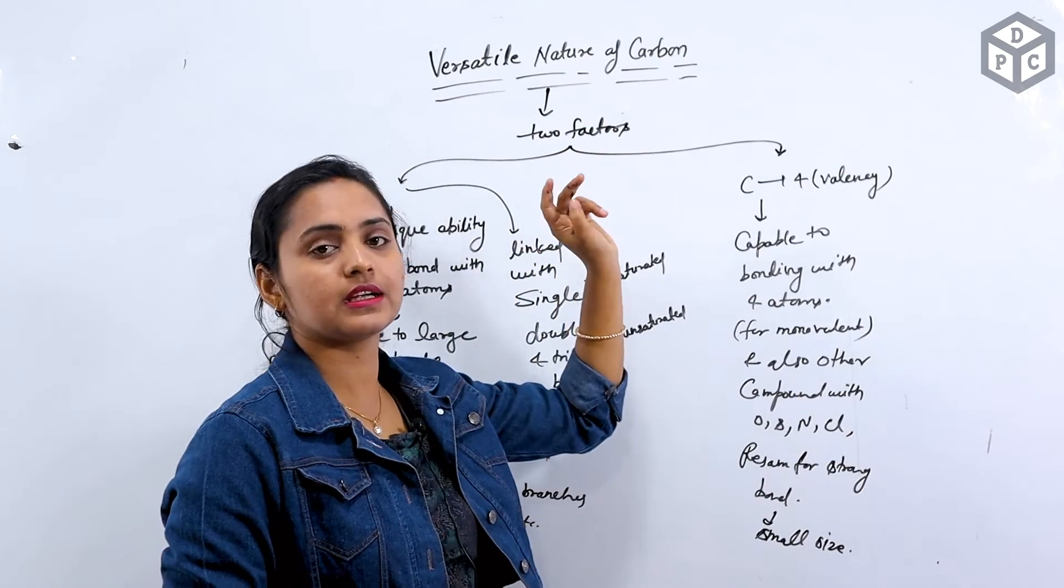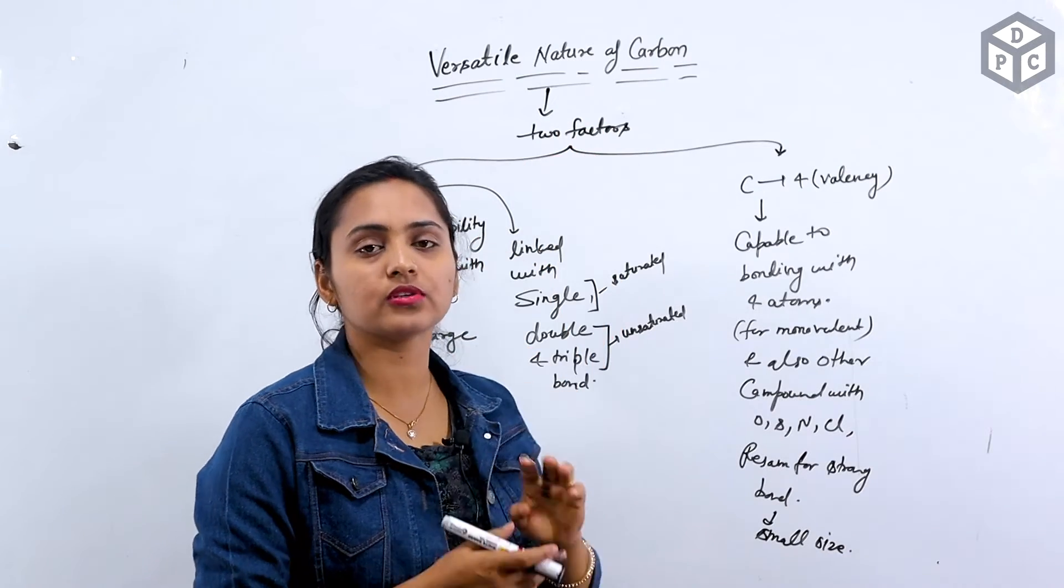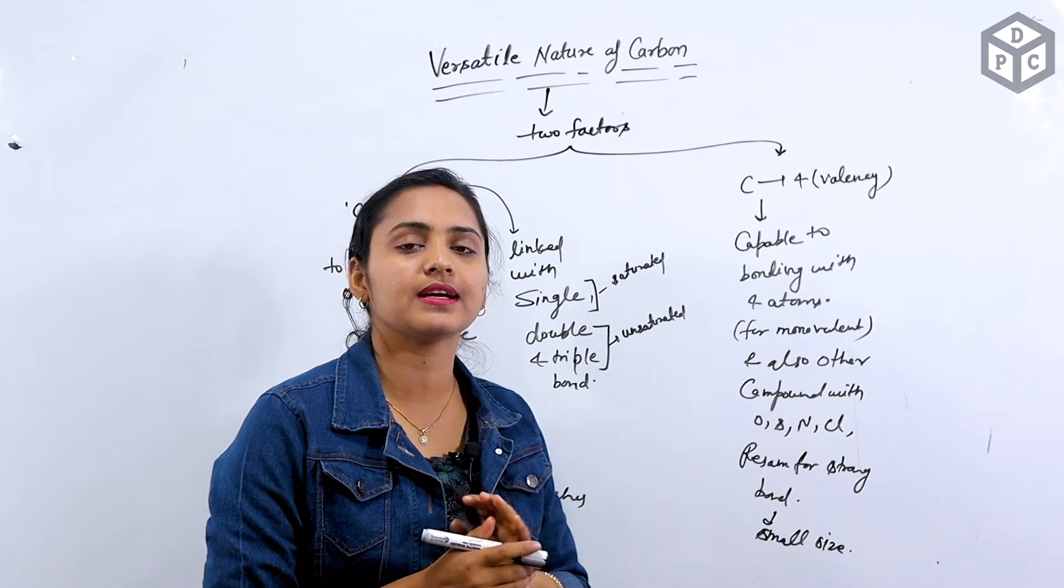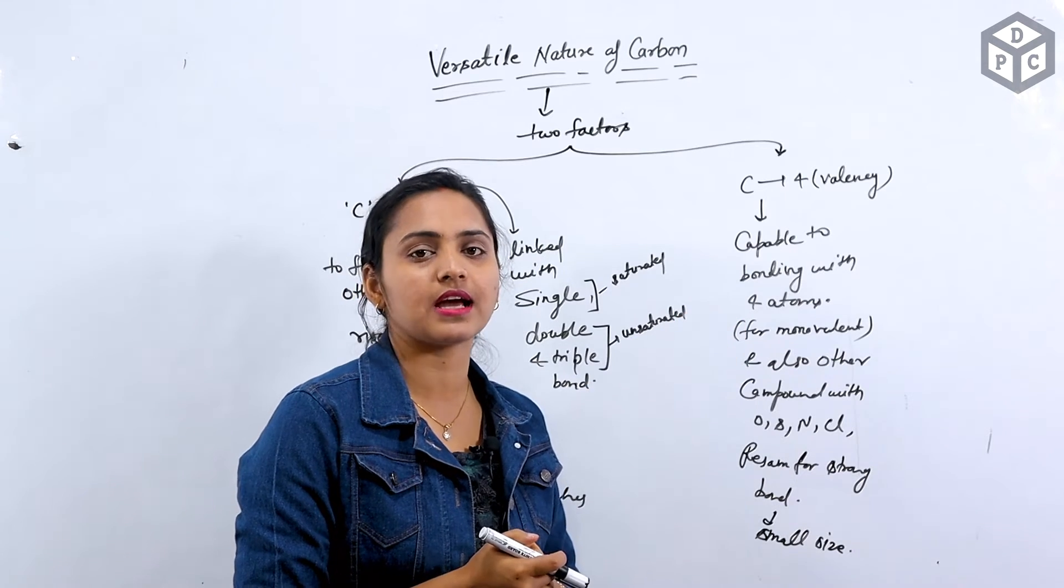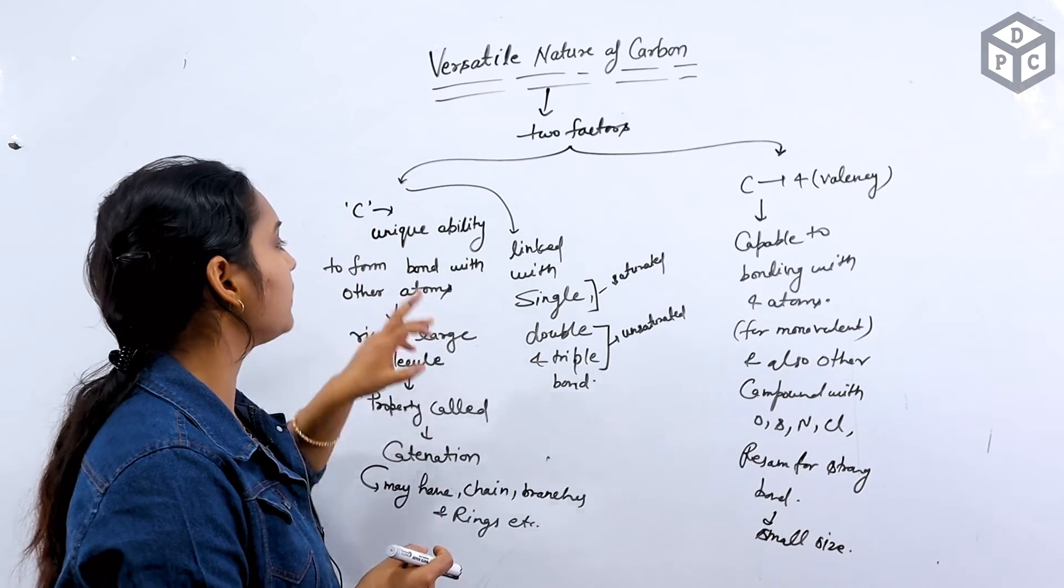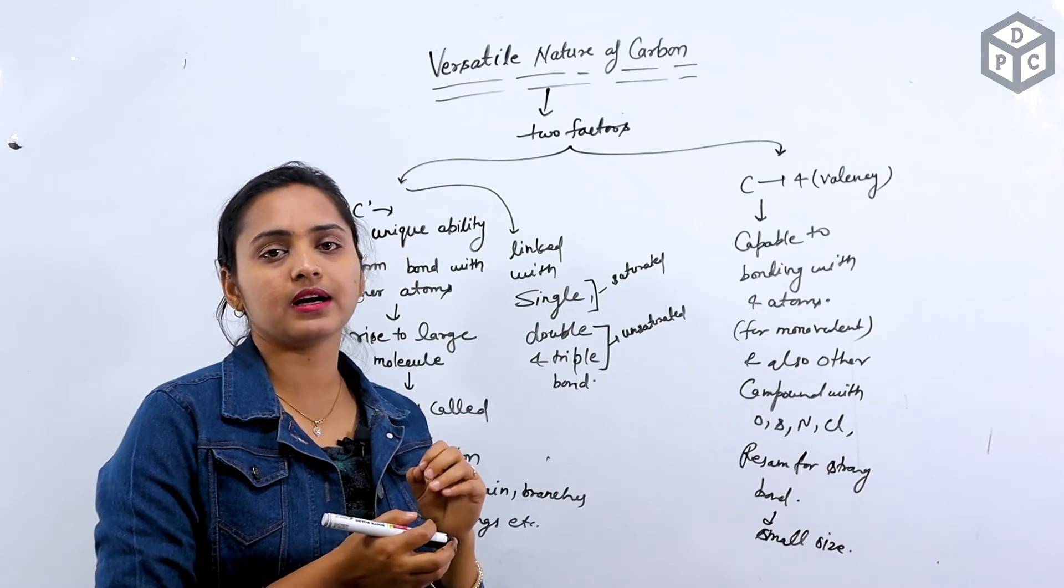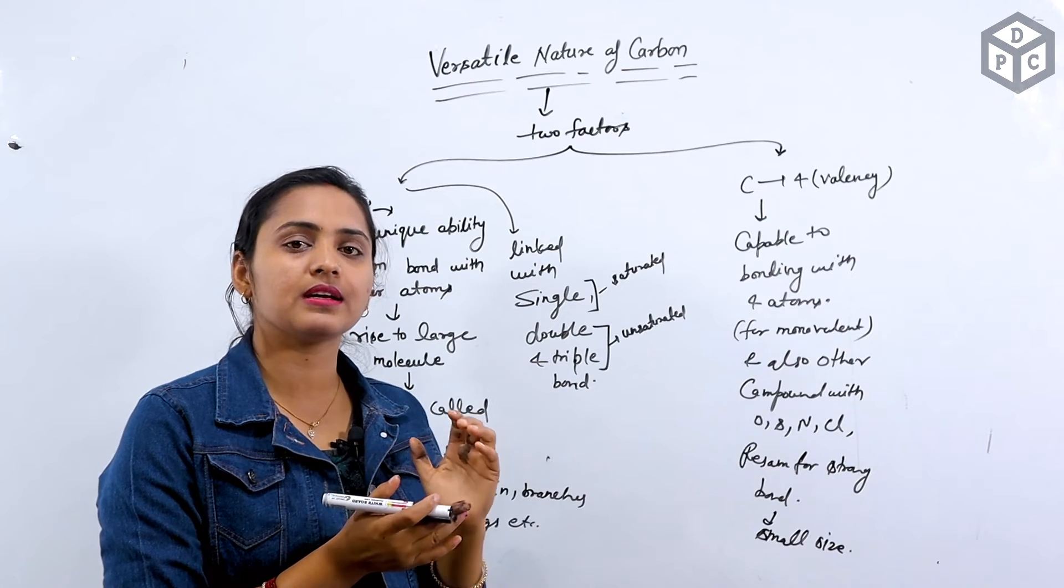Now I will tell you two main properties which is called versatile nature. These are two factors that are important. The first factor is catenation. The second factor is its valence and its size.